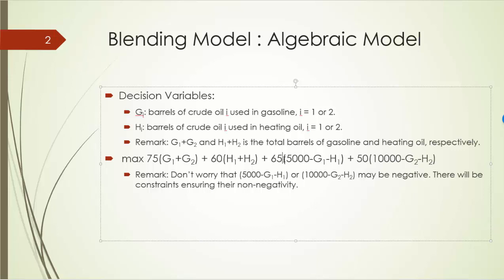You may wonder what if 5,000 minus H1 is negative — don't worry about it. We can take care of that in our constraints. Next, let's look at our constraints.